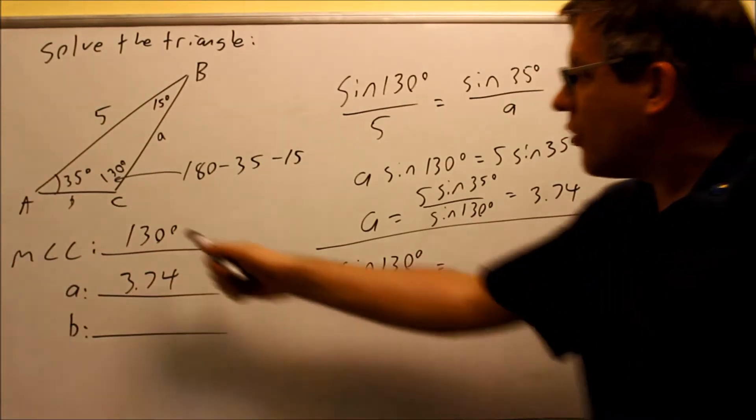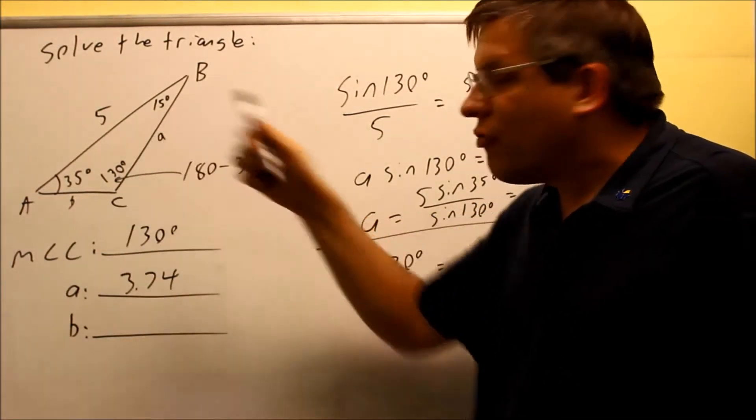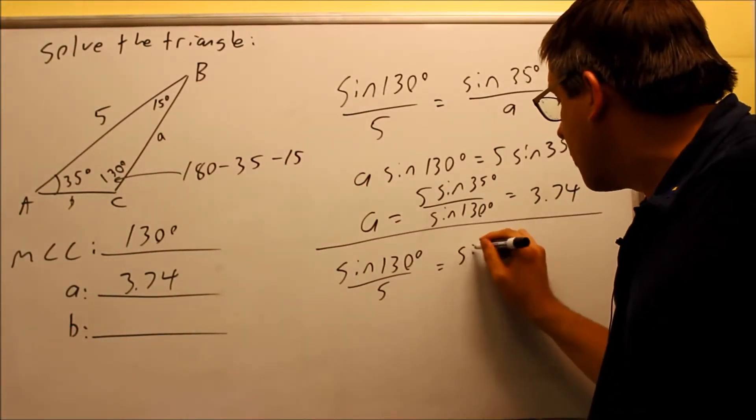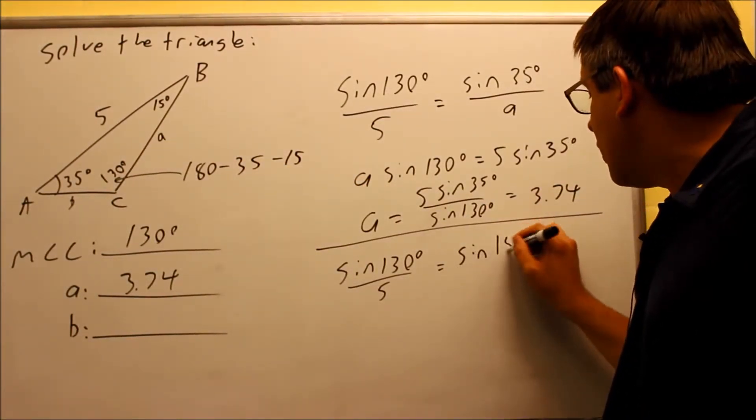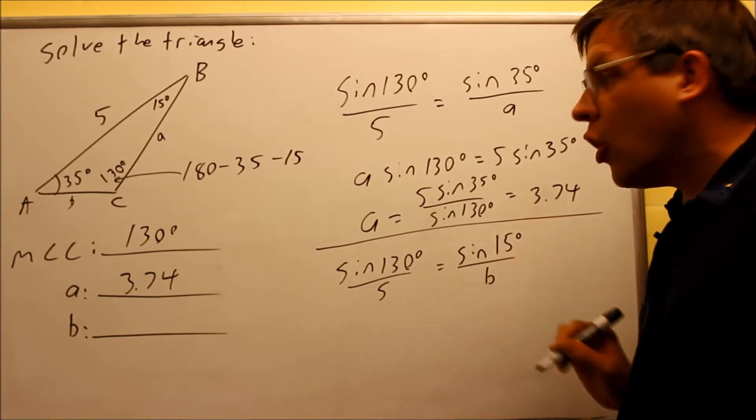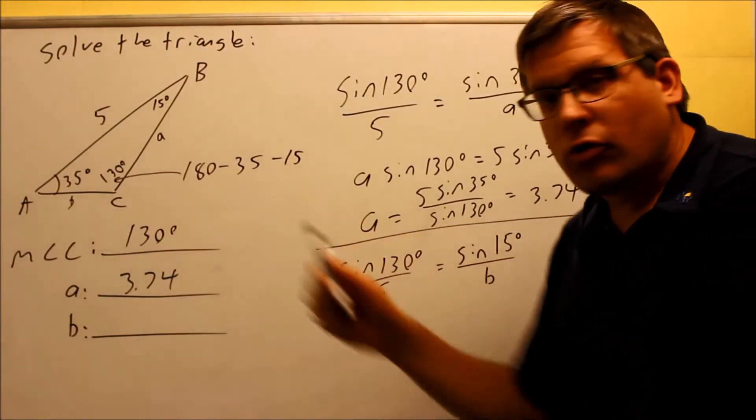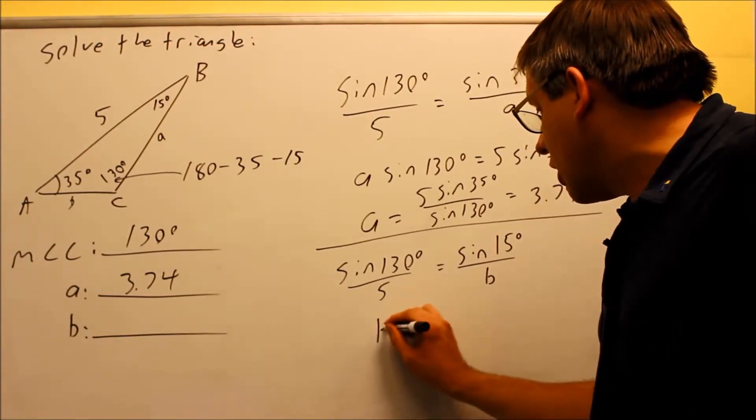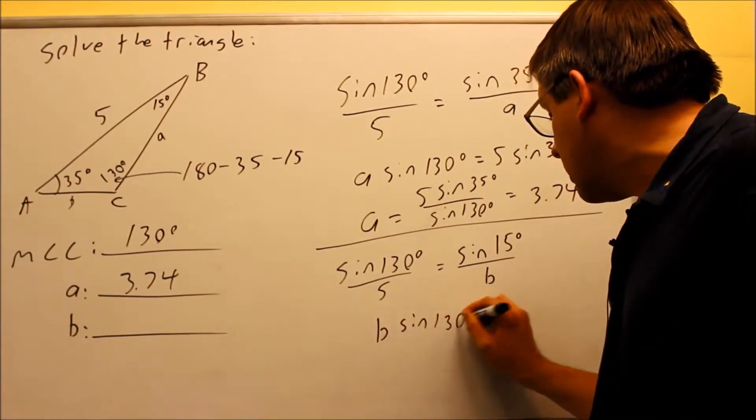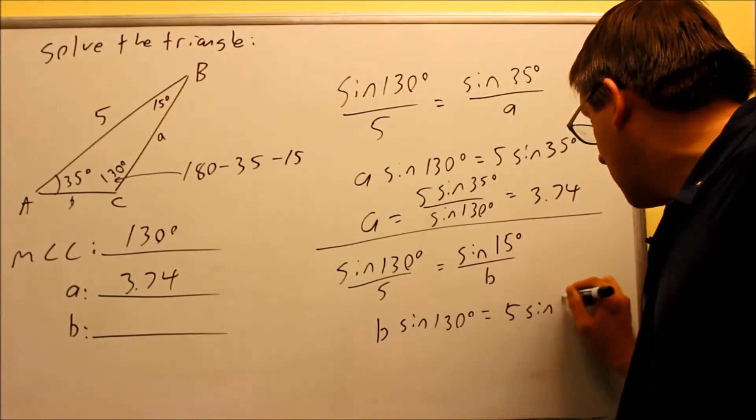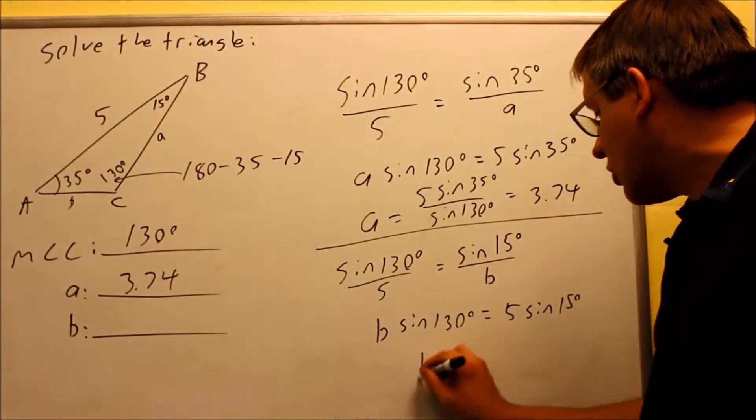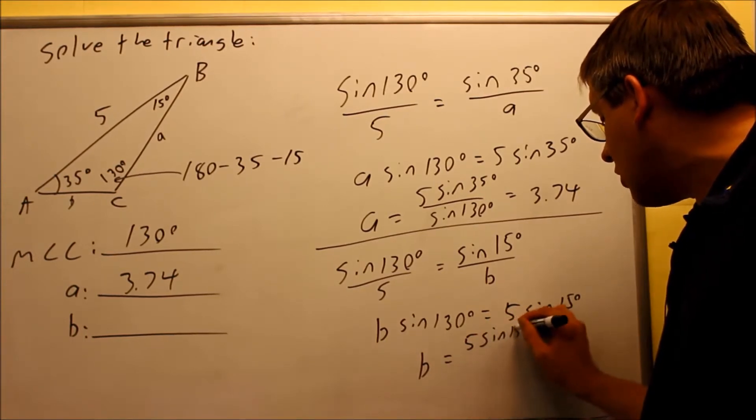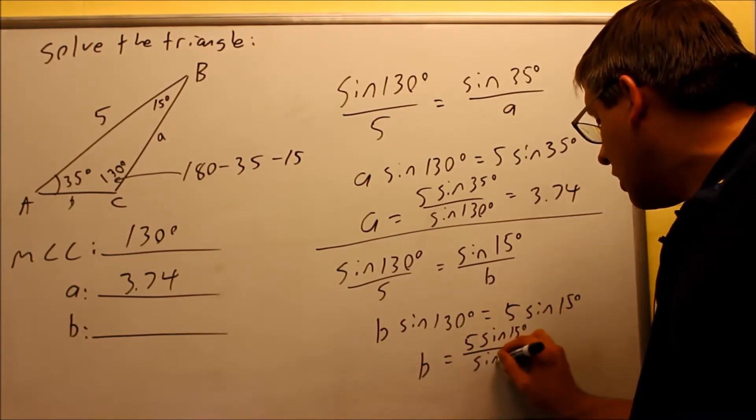But this time, if you want to solve for b, you want to use 15 degrees because that's the angle opposite the side you're trying to solve for. So we're going to do sine of 15 degrees over b, which is what we're solving for next. We're going to cross multiply, do the same thing again, and you're going to get b sine 130 equals 5 sine 15 degrees.